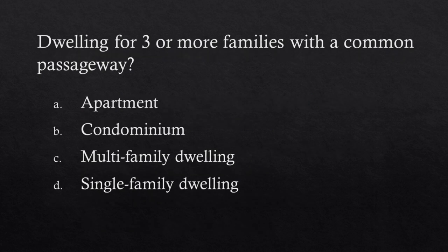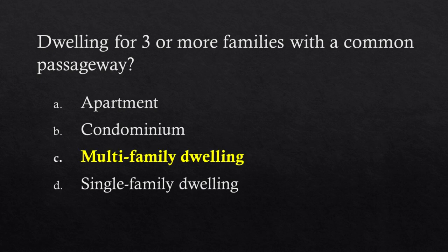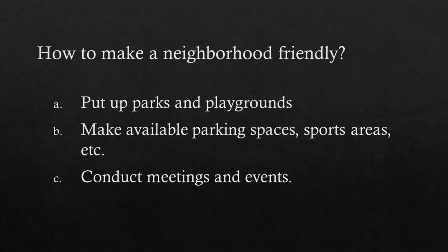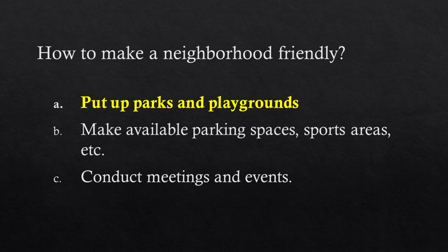A dwelling for 3 or more families with a common passageway — what is it called? Choices: Apartment, Condominium, Multifamily dwelling, Single family dwelling. Answer: Multifamily dwelling. How do you make a neighborhood friendly? Choices: Put up parks and playgrounds, Make available parking spaces and sports areas, Conduct meetings and events. Answer: Put up parks and playgrounds.